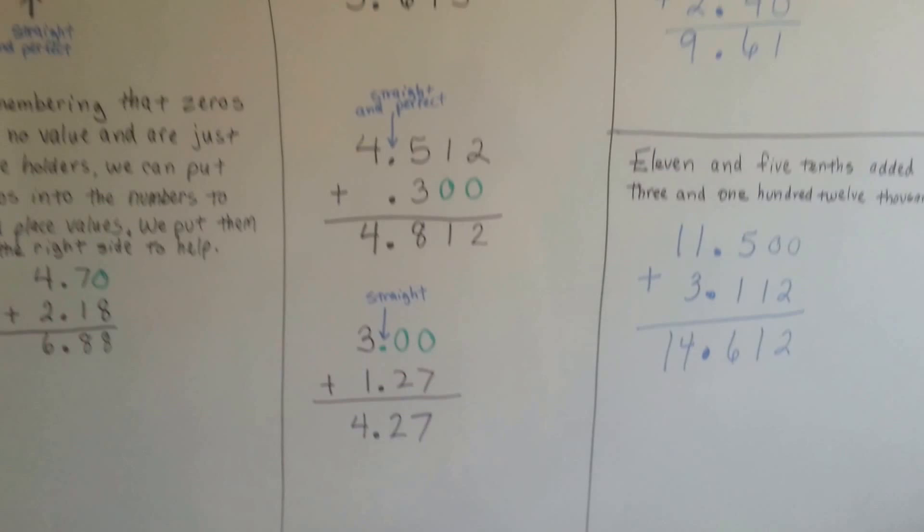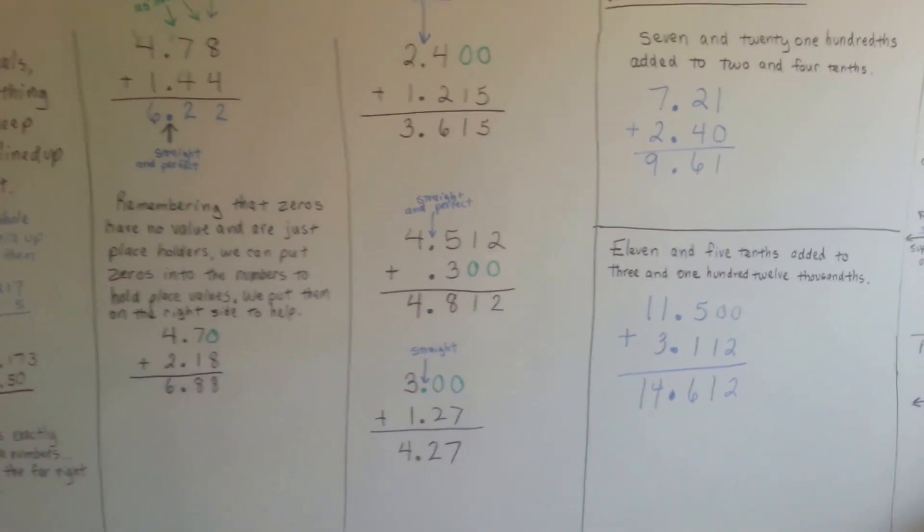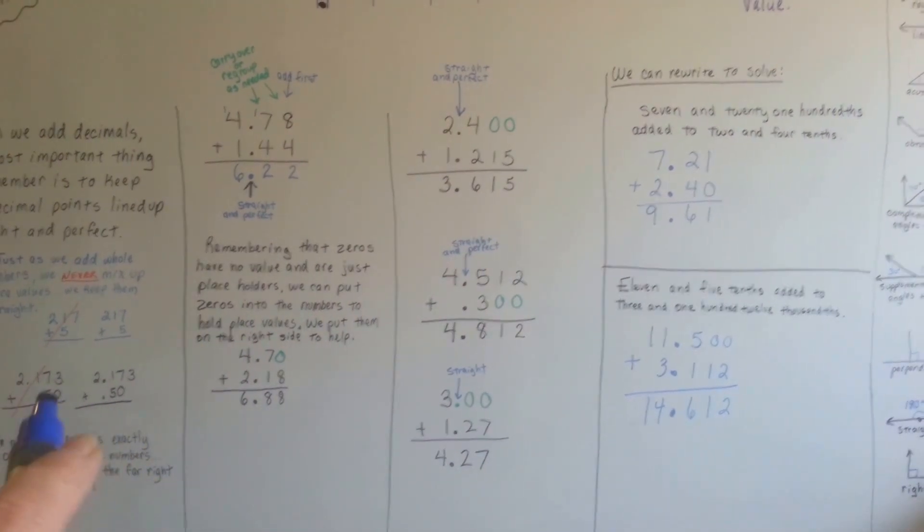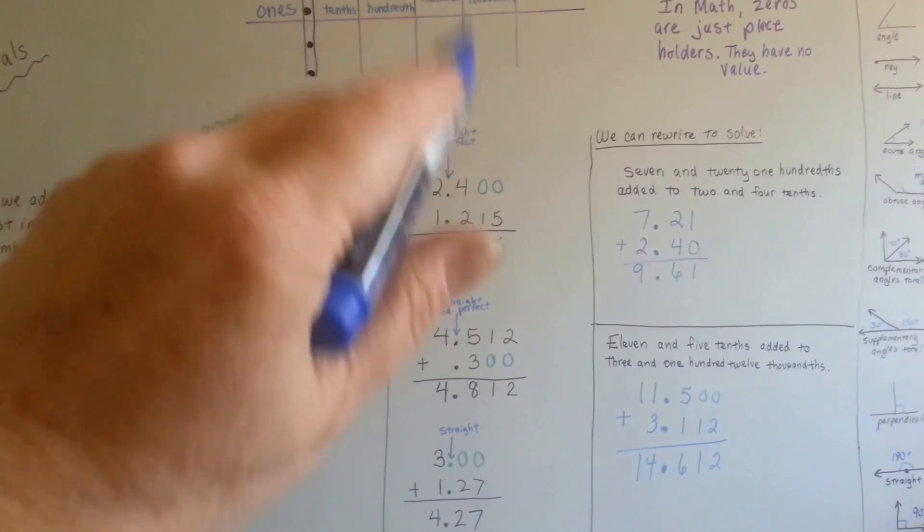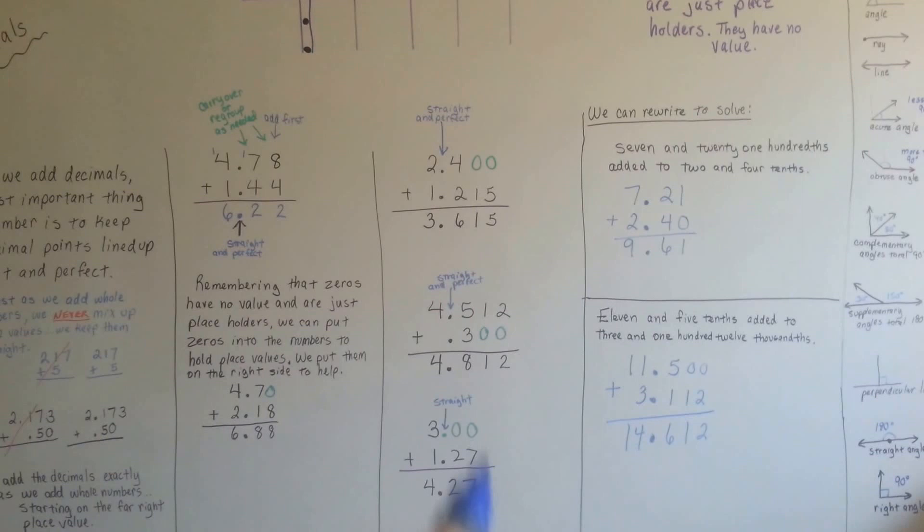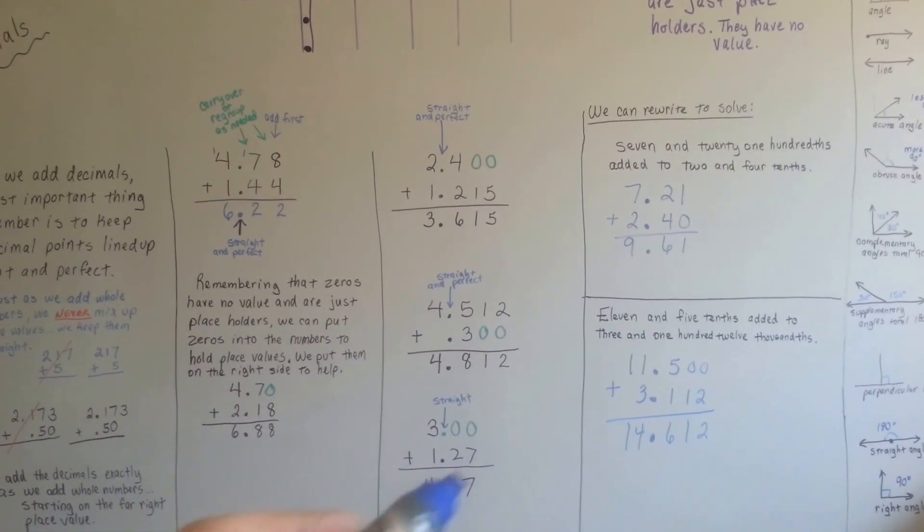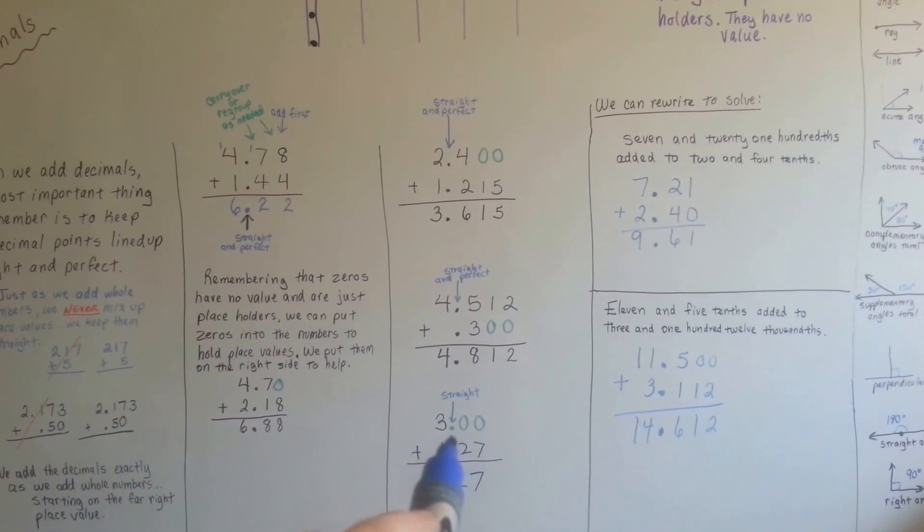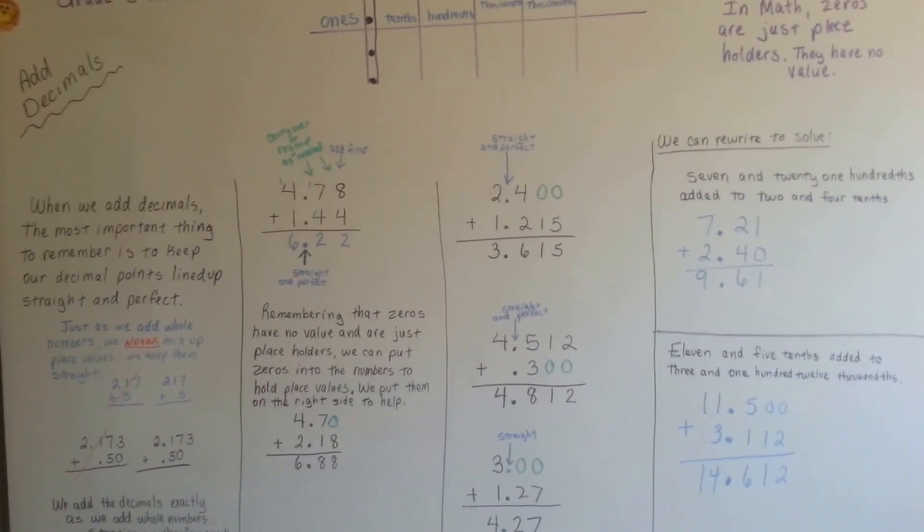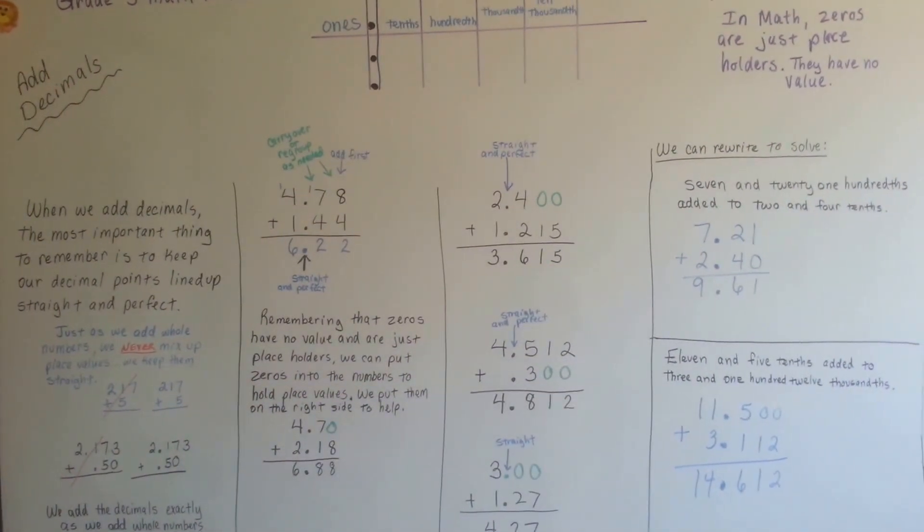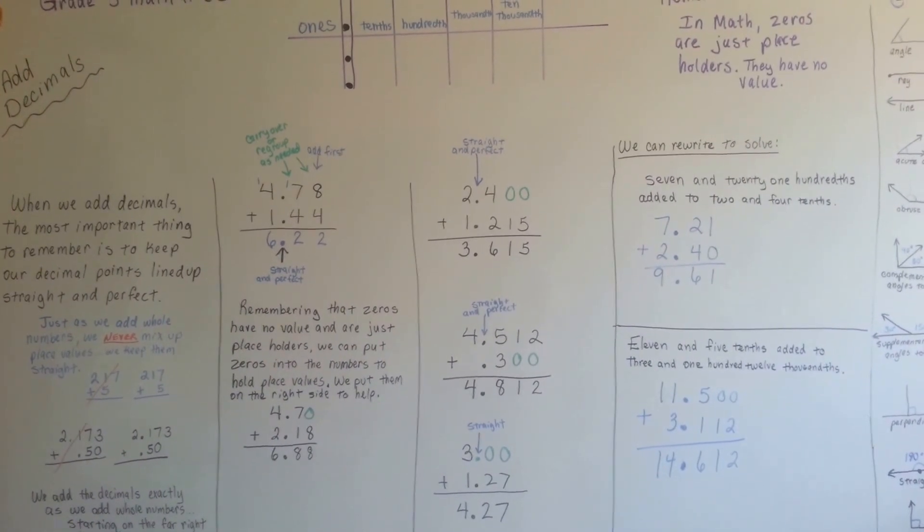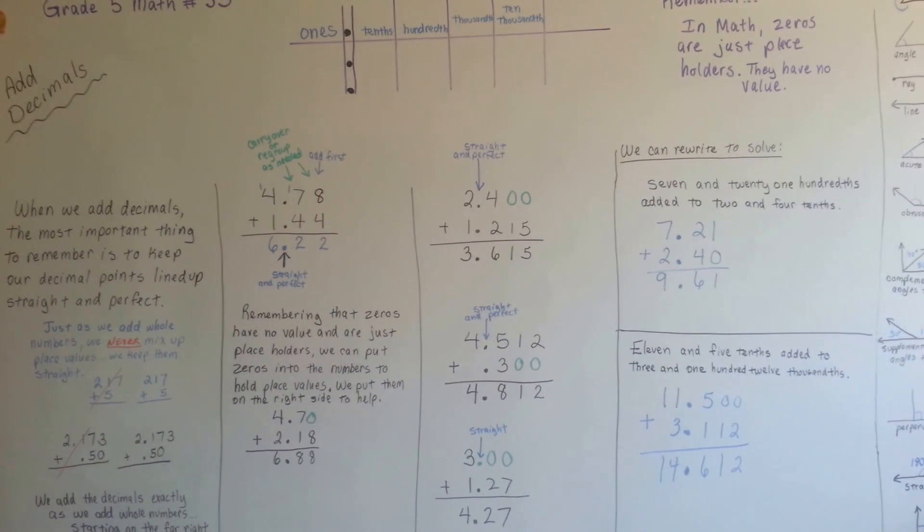Keep your decimal points lined up all nice and pretty, so that your place values are in the correct place. Make sure that you don't cross them over, otherwise you'll get a wrong answer. Keep them straight. Keep your decimal points nice and pretty and straight. That'll help you line them up. Put in your zeros on the right-hand side of the number to help you. And remember, you can even put a decimal point in if you have to, if it's missing one, if it's a whole number. That's how you add decimals. Keep them straight, regroup, just like you would a whole number. Just keep the decimal points all straight and pretty and perfect. See you next video. We're going to talk about subtracting them.